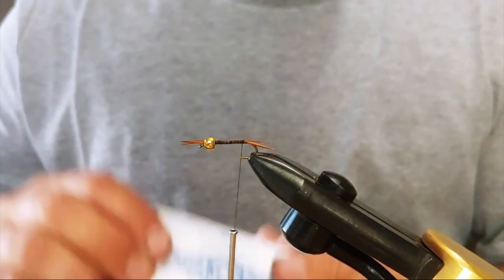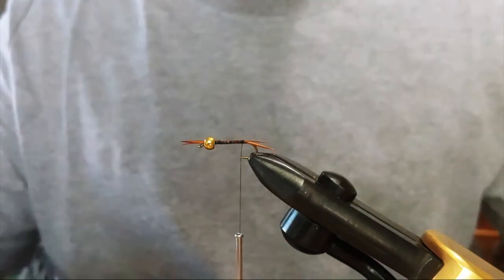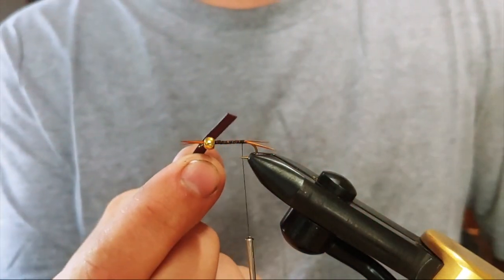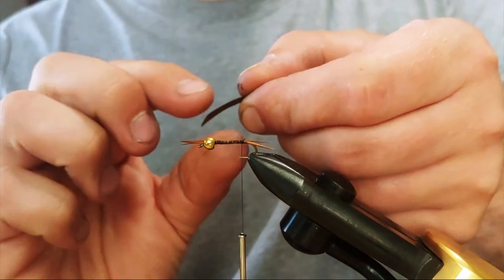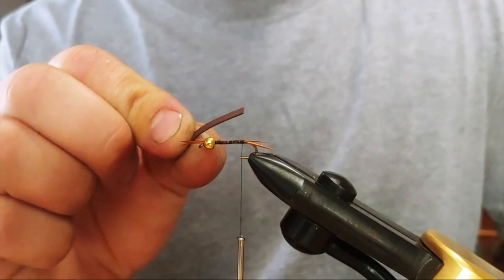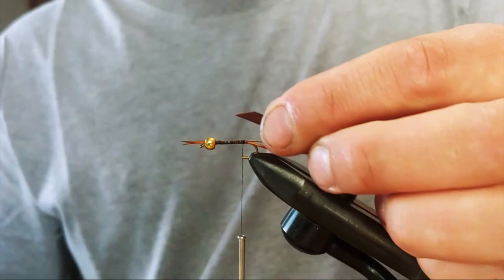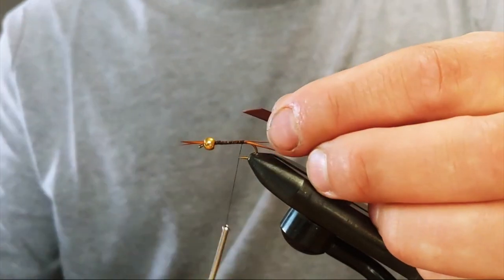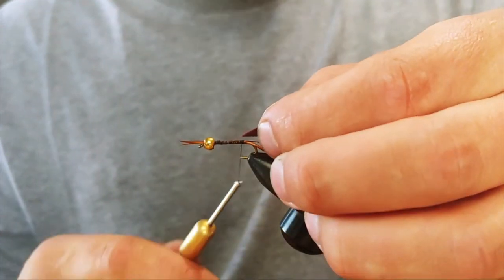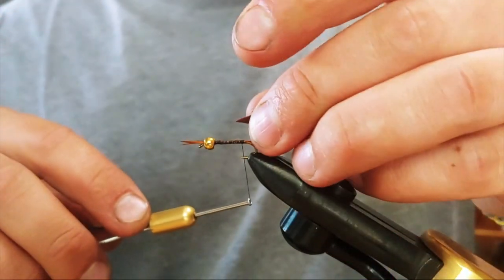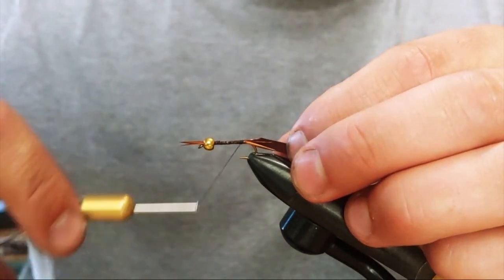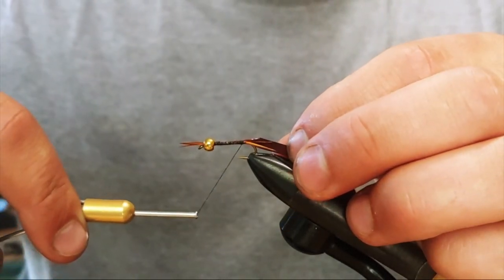So for the body I'm using Virtual Nymph Skin. This is the dark brown. So what I've done, I don't know if you can see it or not, but I used a permanent marker to paint the side of the sheet here black. So you're going to cut that on a 45 to 30 degree angle. Tie that in there on the tip. Make sure you bite down pretty good.